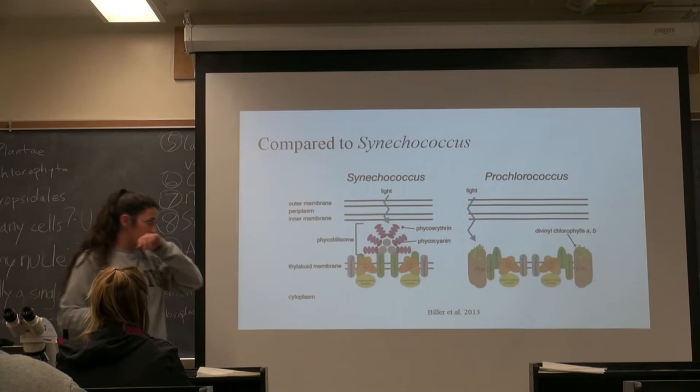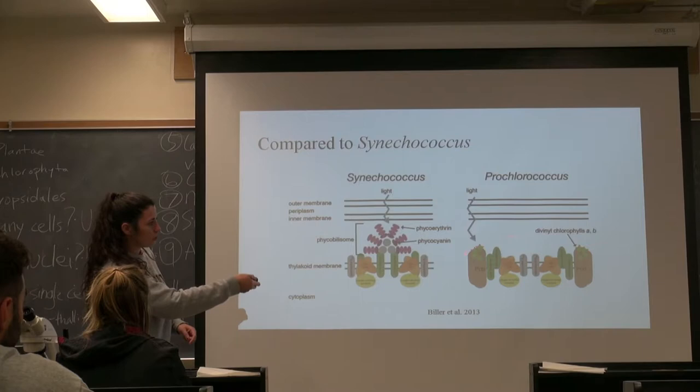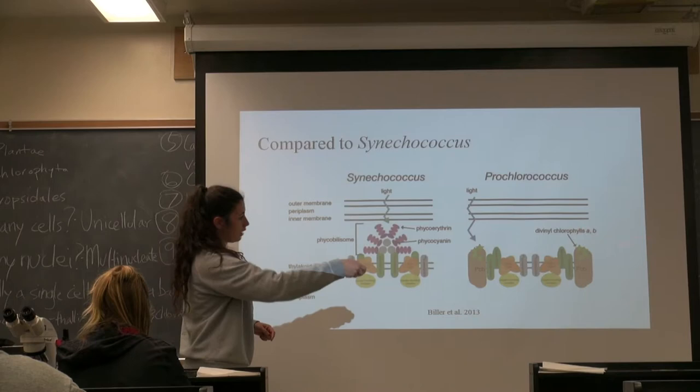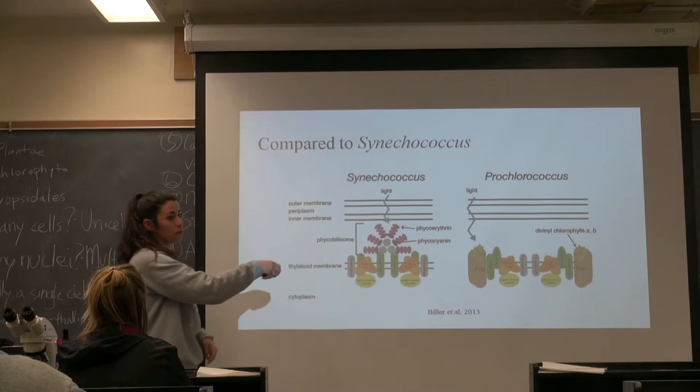So this is a comparison — if you look here, one of the defining characteristics is the chlorophyll A and B, and if you look at Xenococcus, they have phycobilins. So that's one of the very big key characteristic differences between them.